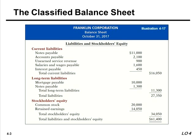Under long-term liabilities we have mortgages payable and notes payable. In those cases you have more than one year to repay the debt. A mortgage payable could be paid over 20 or 30 years. Notes payable such as car loans might be paid over five or six years, and student loans can be paid over as long as 30 years. Once we've come up with total current liabilities and total long-term liabilities, we add the two together to come up with total liabilities.